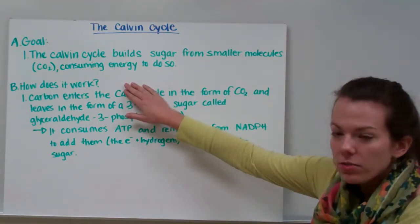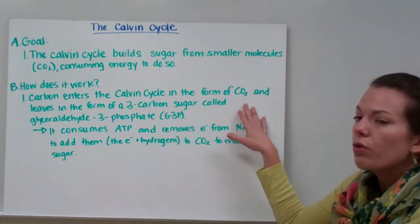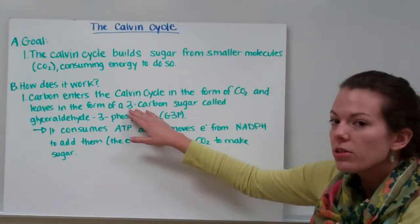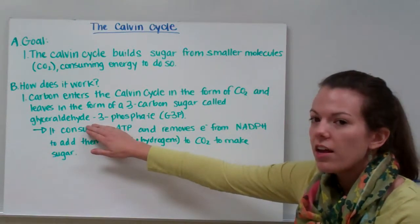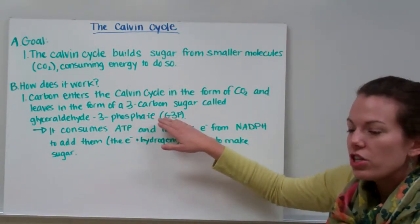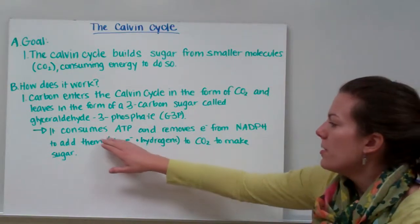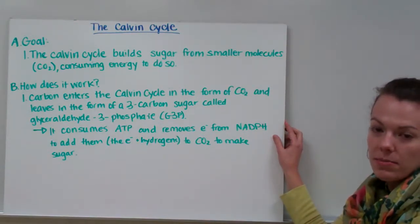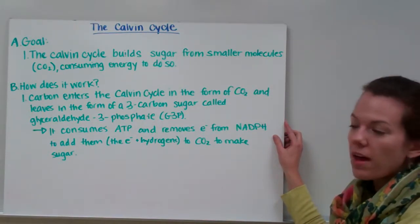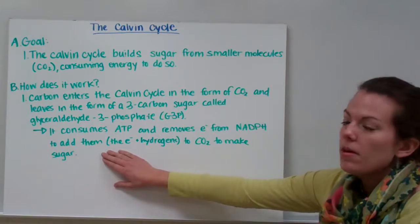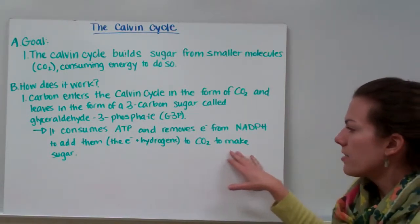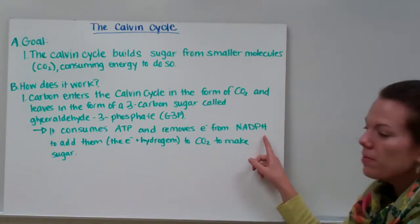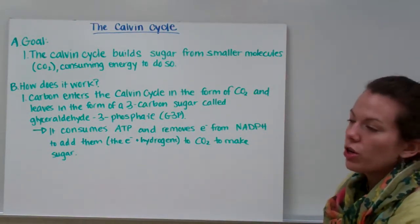Now, how does it work? The carbon is going to enter the Calvin Cycle in the form of carbon dioxide, and it's going to leave in the form of a three-carbon sugar called glyceraldehyde-3-phosphate, or G3P. It's going to consume ATP in the process, and it removes electrons from NADPH and adds them to carbon dioxide to make the sugar.